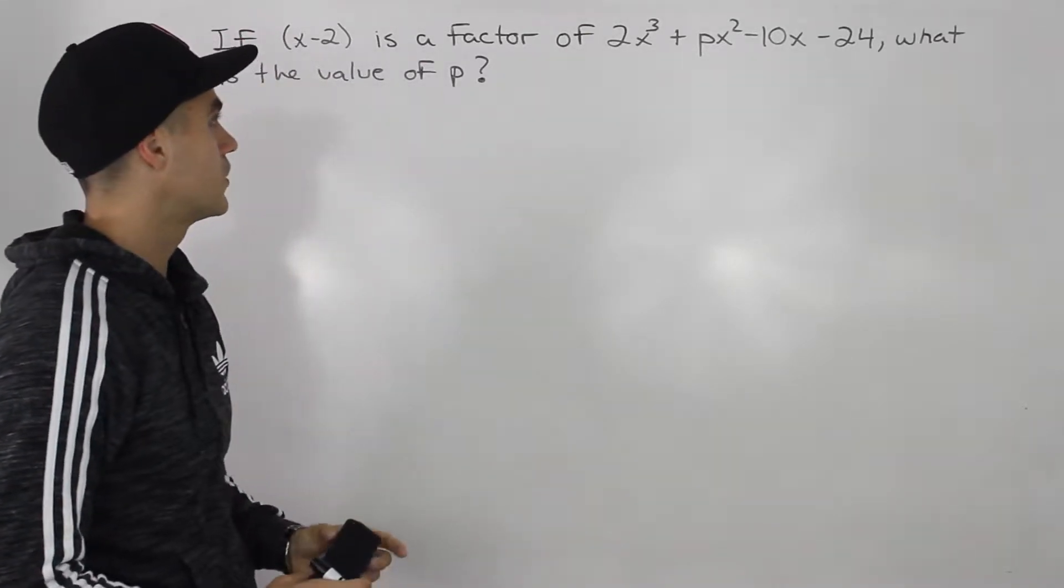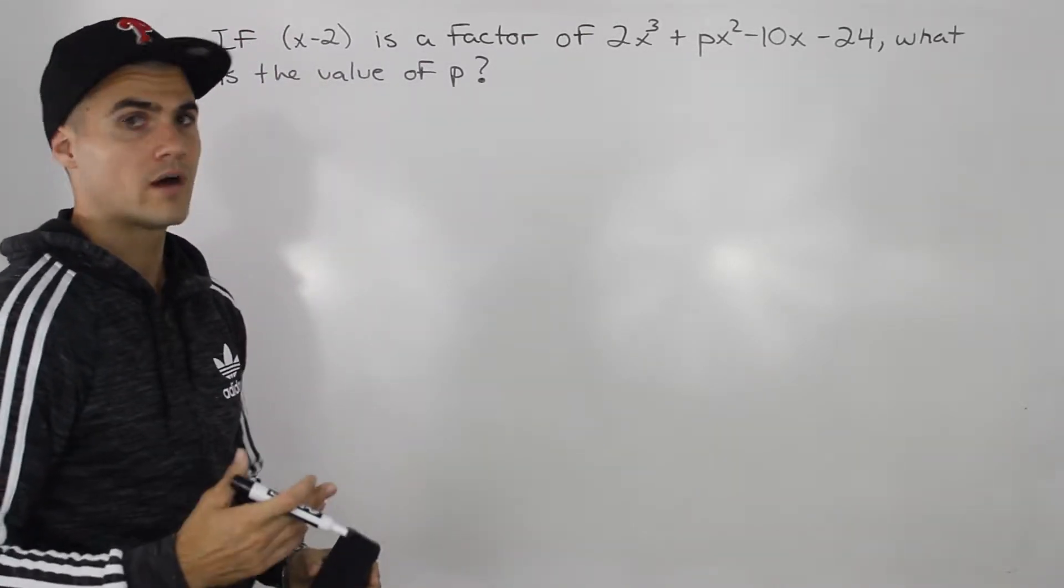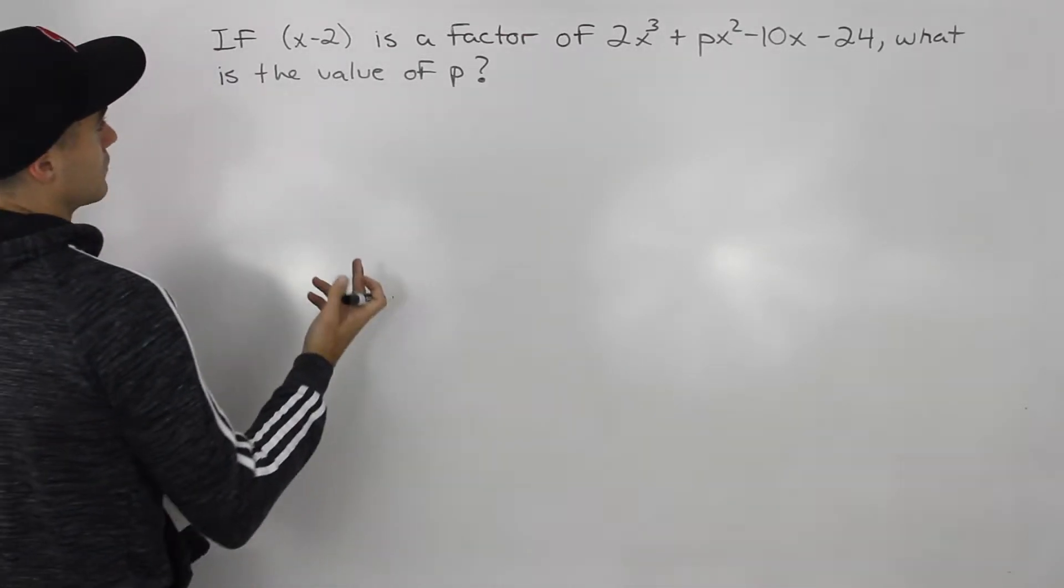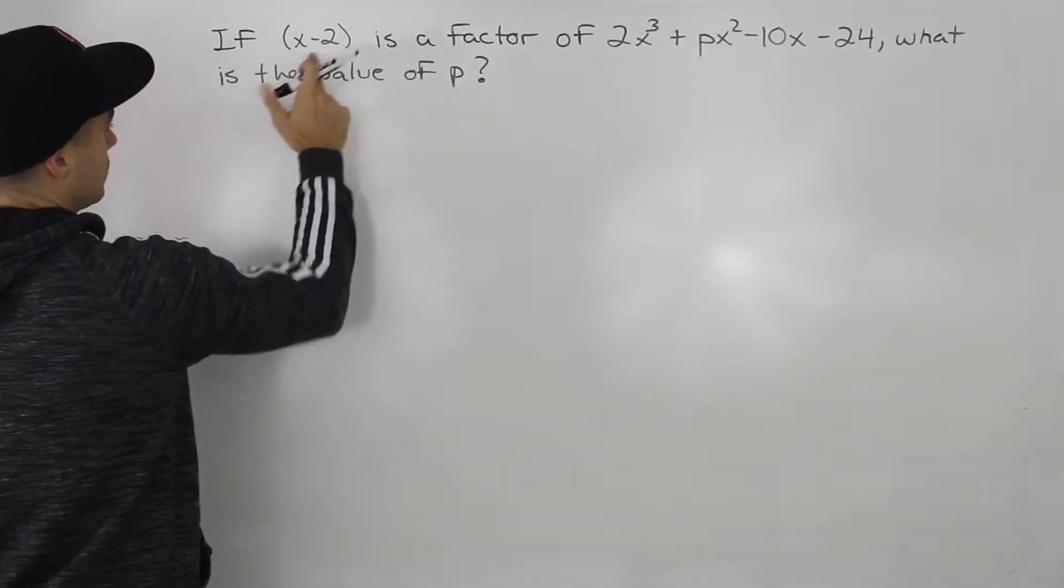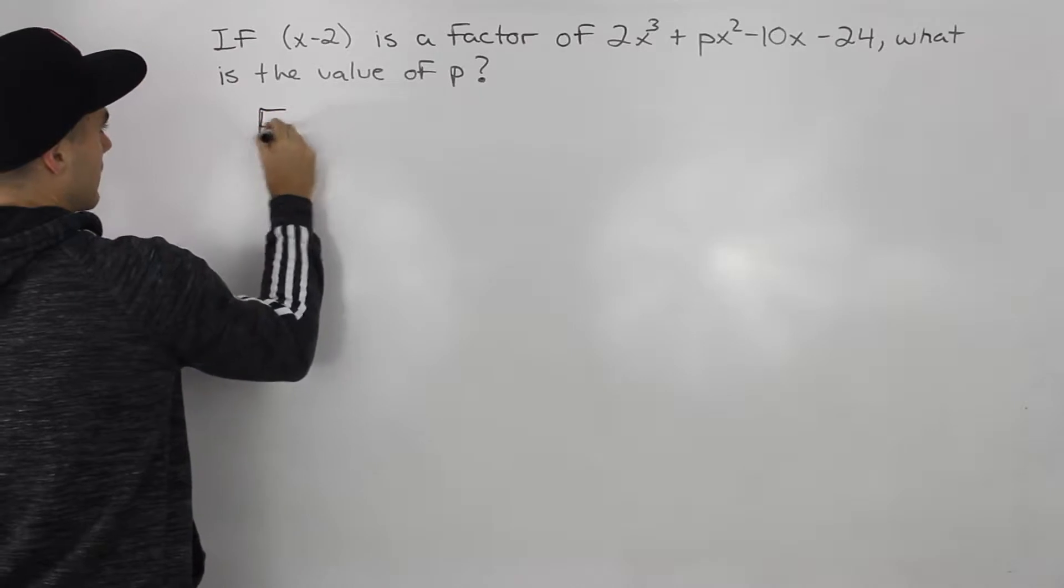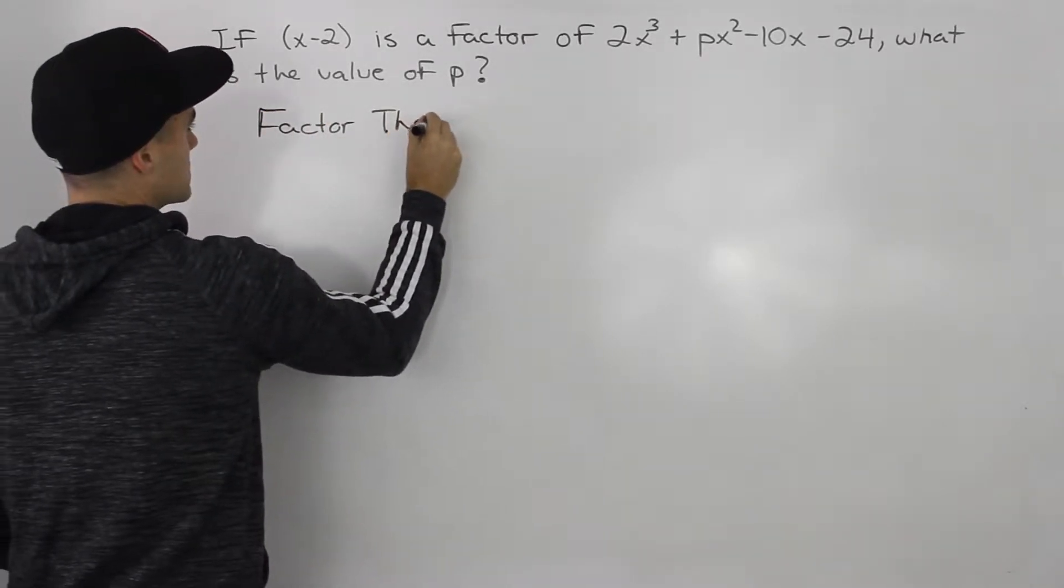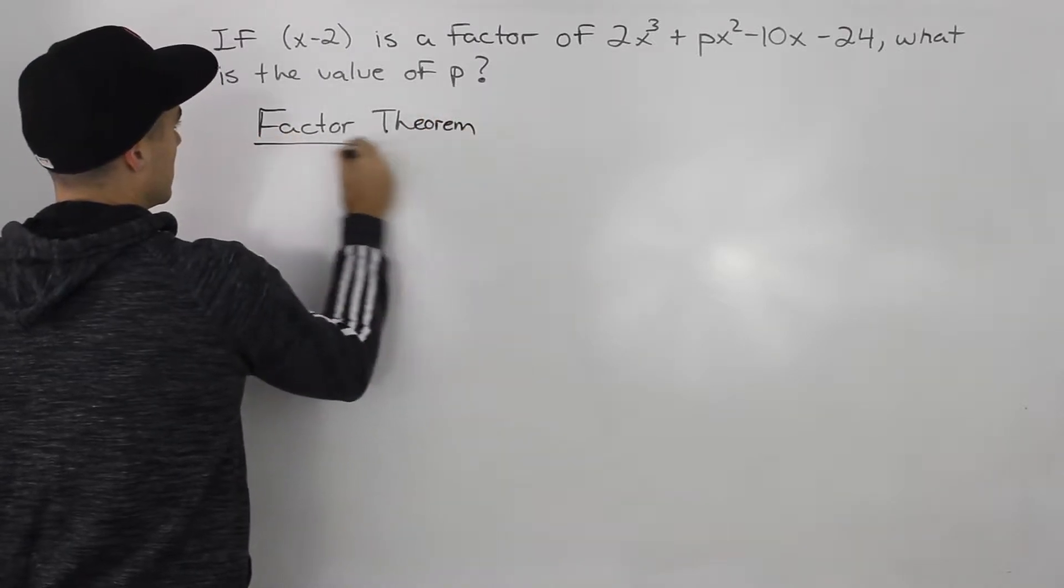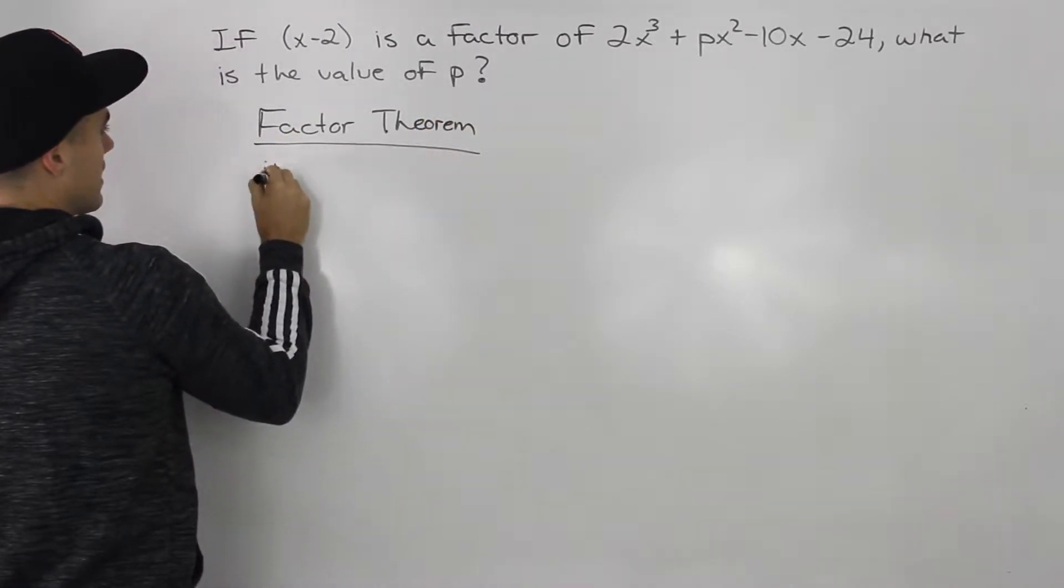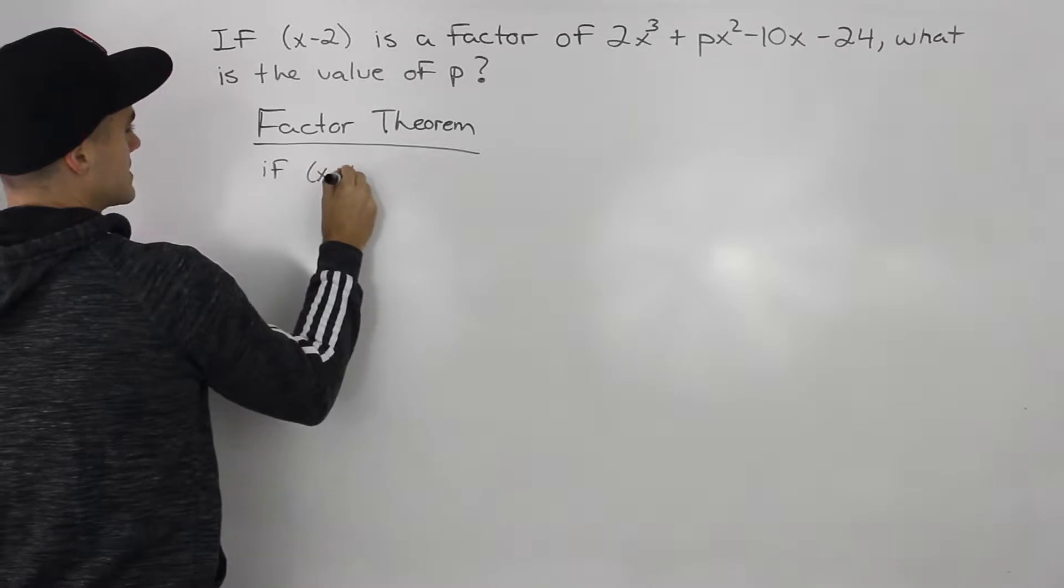So how can we go about doing this? Well, we can use factor theorem because we're told that x minus 2 is a factor. And just to do a quick little review, what does factor theorem say? It basically says, generally, if x minus k is a factor of a polynomial f of x...